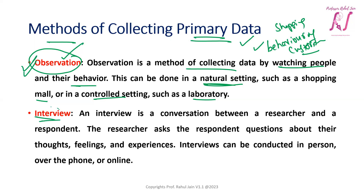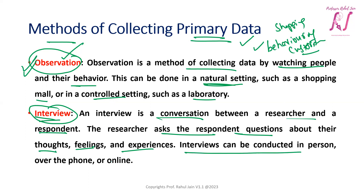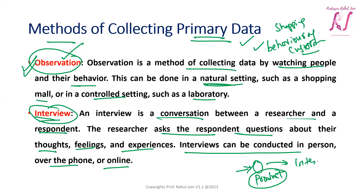The second way of collecting primary data is interviews. An interview is a conversation between a researcher and a respondent. The researcher asks a set of questions about their thoughts, feelings and experiences, and interviews can be conducted in person, over the phone, or online. For example, if a researcher wants to get ratings of a particular product from different customers, the interview can be the best method. We can design a set of questions and ask them to different customers to collect the data.